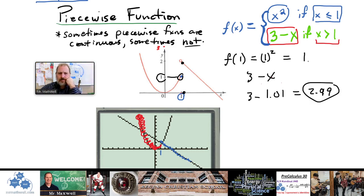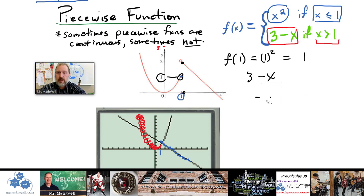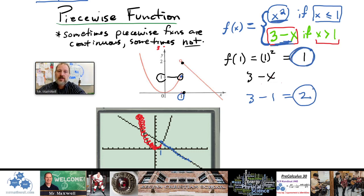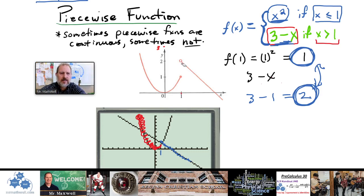You can also just plug x = 1 into (3 − x): you get 3 − 1 = 2. So the limit from the right looks like 2, while the limit from the left (using x²) gives 1. These two values are different, confirming the function is not continuous at x = 1.